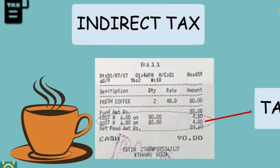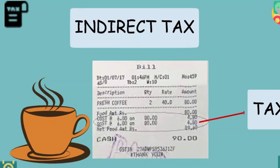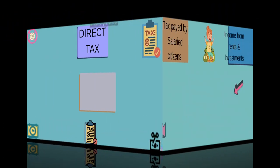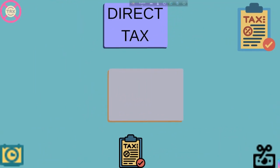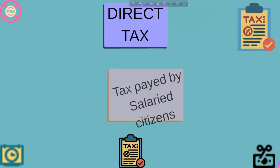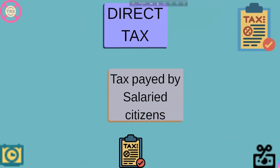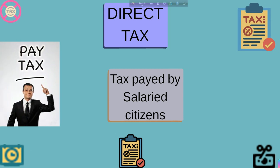These are indirect taxes. All salaried citizens are expected to file an income tax return, or ITR. There is a minimum income level, and if you cross that, you have to pay income tax to the government.